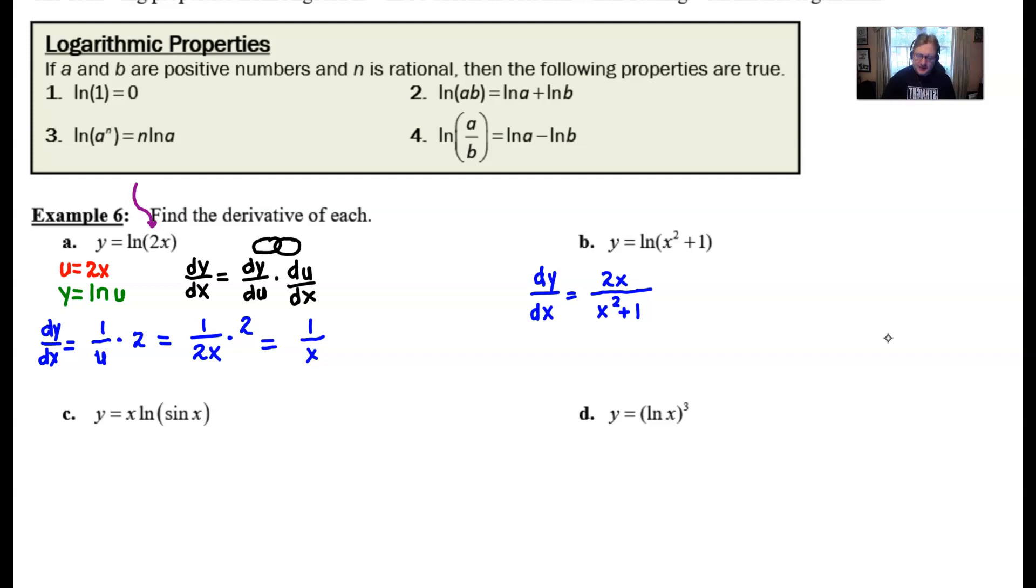Now we start to get into some problems that are a little bit trickier. Look at part c: y equals x times the natural log of sine of x. Probably didn't even think you could take the natural log of a trig word, but you can. The thing about this problem that's really important is that we have to understand that there is an implied multiplication. You need to recognize this is going to require a product rule because of that multiplication.